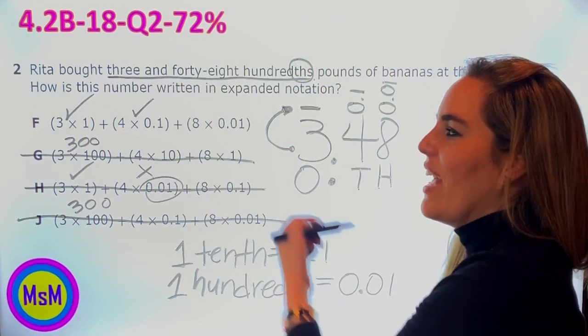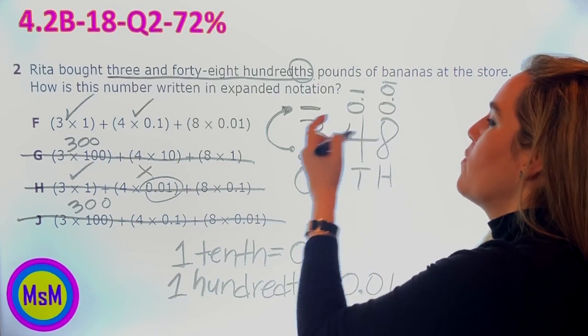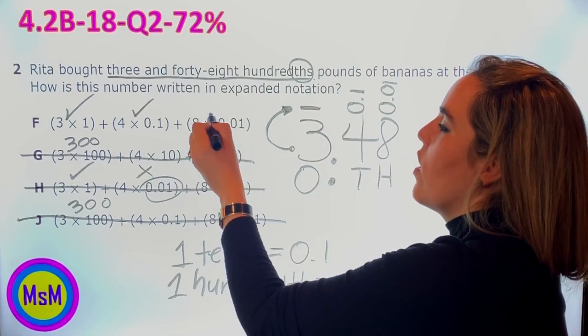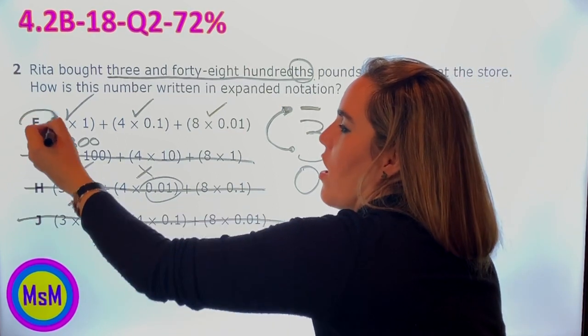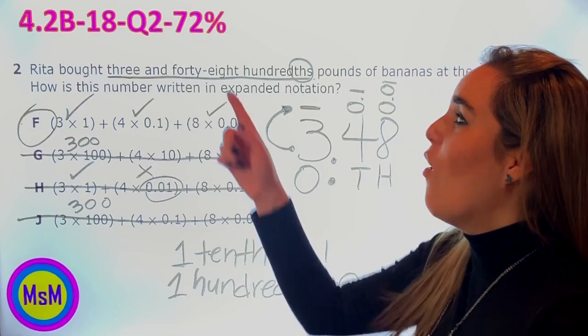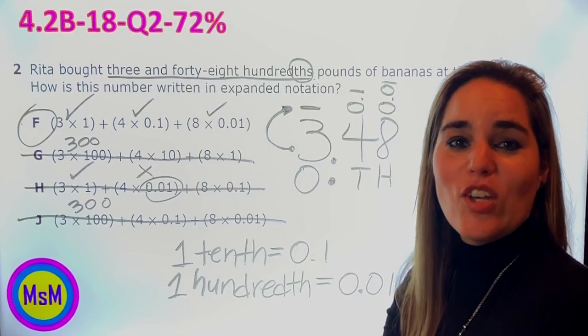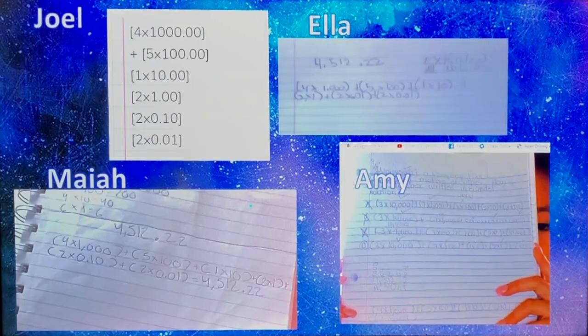And as simple as that, I only have F left. Let's finish up. I have eight groups of one hundredth, 8 times 0.01. Yes! And now I know with all my heart that F is the correct answer. Can you believe that only 72% of the kids got this correct? It's extremely easy.